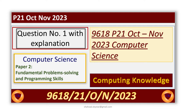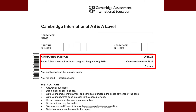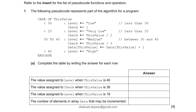I am requesting you to please watch the full video. This is 9618, variant 21, October November 2023, Fundamental Problem Solving and Programming Skills, paper 2. The following pseudocode represents part of the algorithm for a program. This program is given in the question paper and our task is to complete the table by writing the answer for each row.